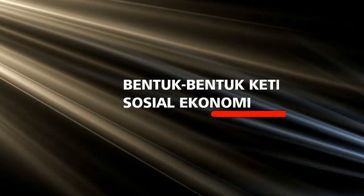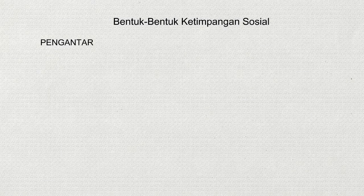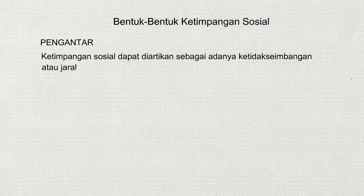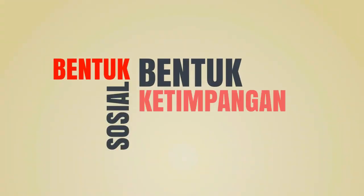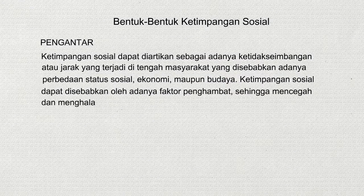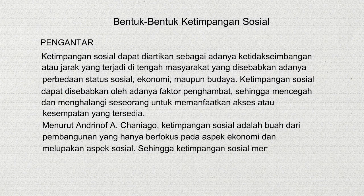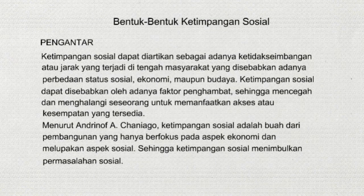Sosiologi: Bentuk-bentuk ketimpangan sosial ekonomi. Ketimpangan sosial dapat diartikan sebagai adanya ketidakseimbangan atau jarak yang terjadi di tengah masyarakat yang disebabkan adanya perbedaan status sosial, ekonomi, maupun budaya. Ketimpangan sosial dapat disebabkan oleh adanya faktor penghambat, sehingga mencegah dan menghalangi seseorang untuk memanfaatkan akses atau kesempatan yang tersedia. Menurut Andrinov Acaniago, ketimpangan sosial adalah buah dari pembangunan yang hanya berfokus pada aspek ekonomi dan melupakan aspek sosial, sehingga menimbulkan permasalahan sosial.